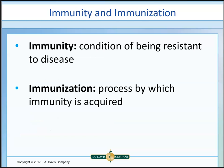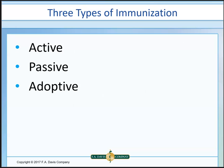Remember from last chapter: immunity is a condition of being resistant to a disease. Immunization is the process by which immunity is acquired. There are three different types of immunization: active, passive, and adoptive.